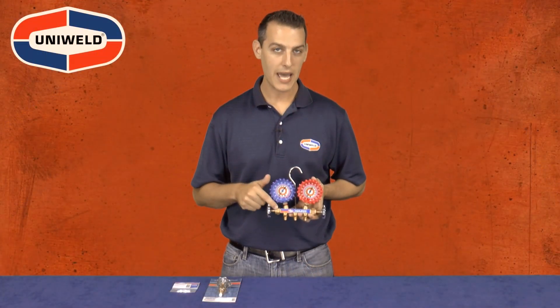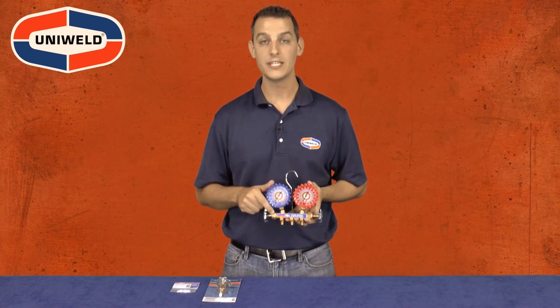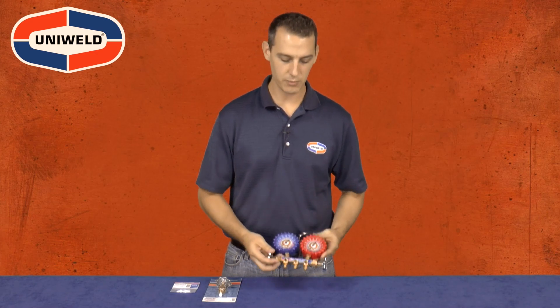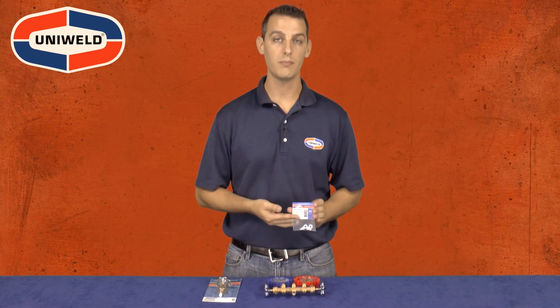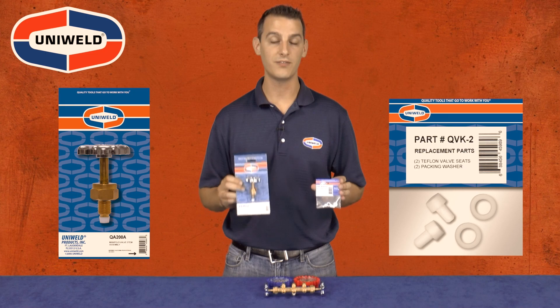After retightening the brass packing washer on the manifold body, if the valve continues to leak, then the Teflon seat and packing washer will need to be replaced. This is also a simple repair that can be done two different ways: Uniweld's QVK2 manifold valve repair kit or Uniweld's QA200A full valve assembly.